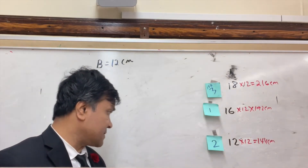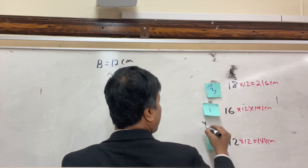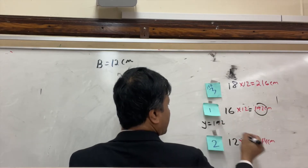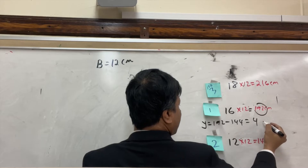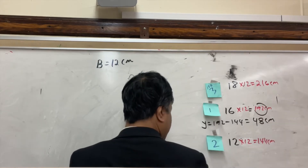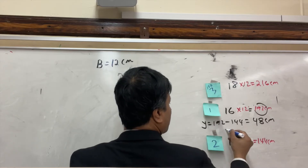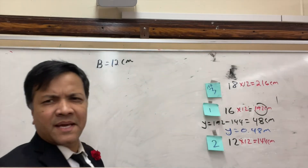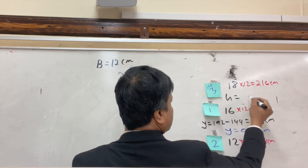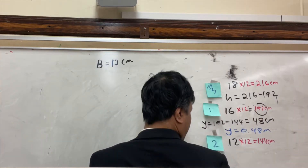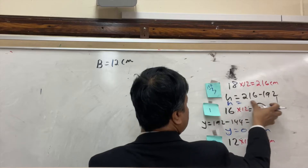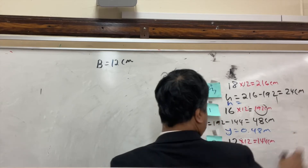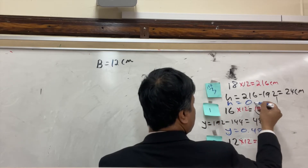The squat distance y is equal to 192 minus 144, which is 48 centimeters, so y = 0.48 meters. The jumping height H is 216 minus 192, which is 24 centimeters, so H = 0.24 meters.